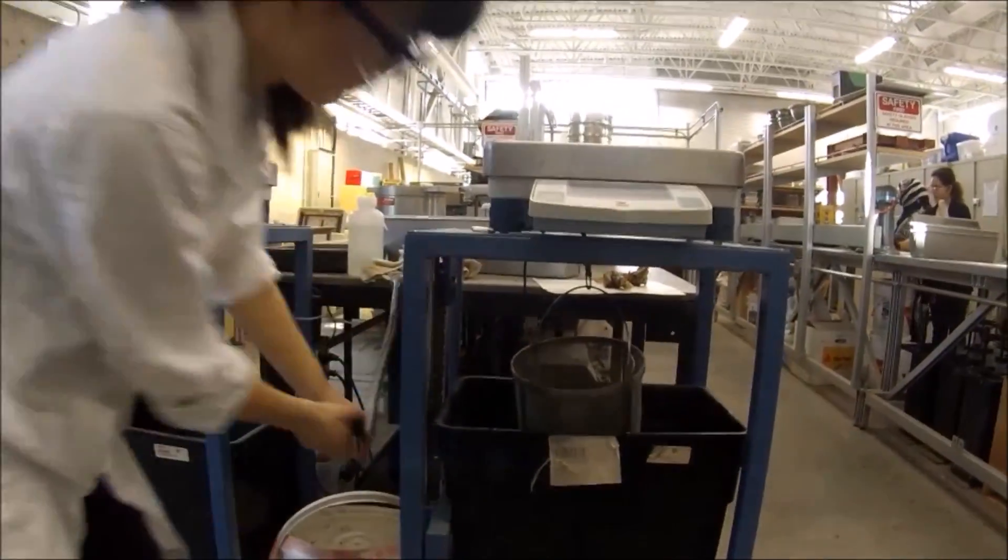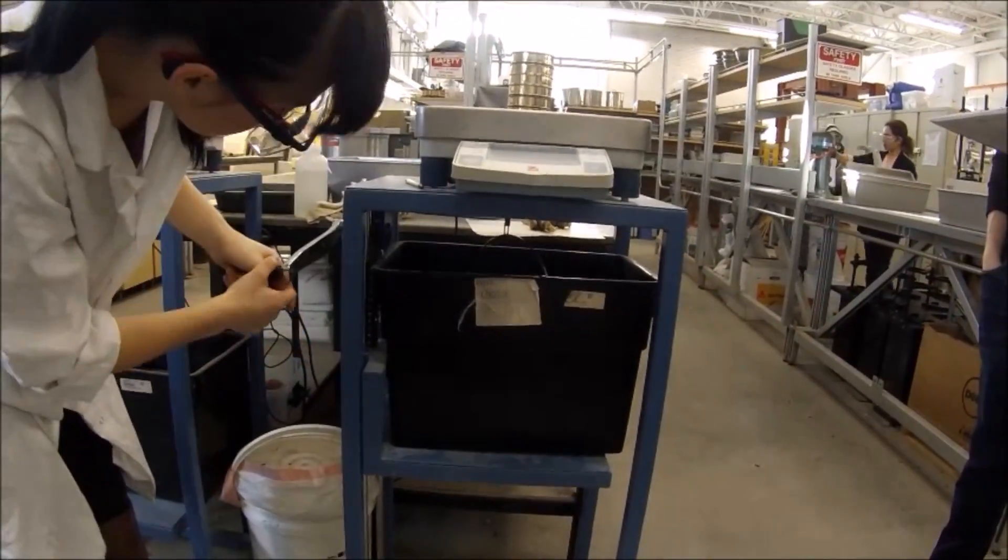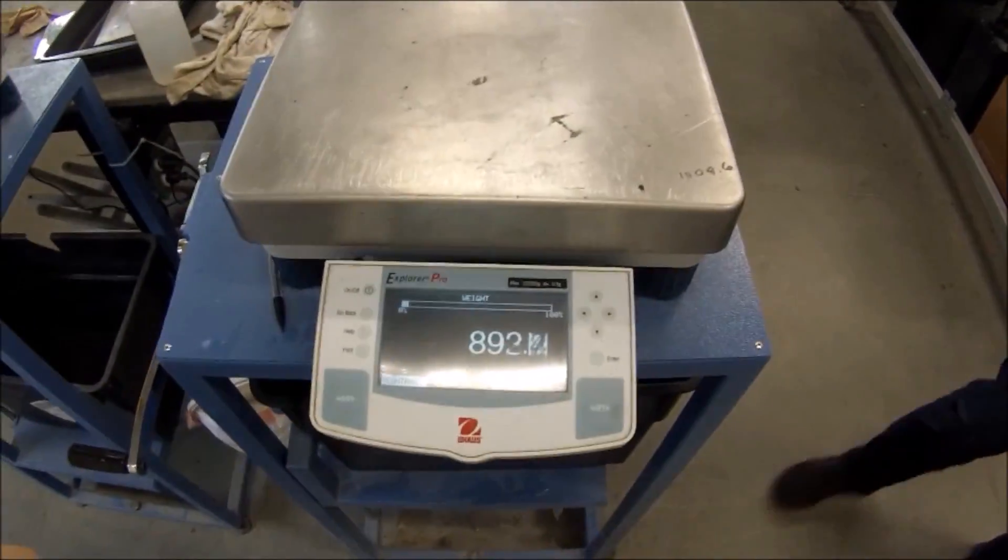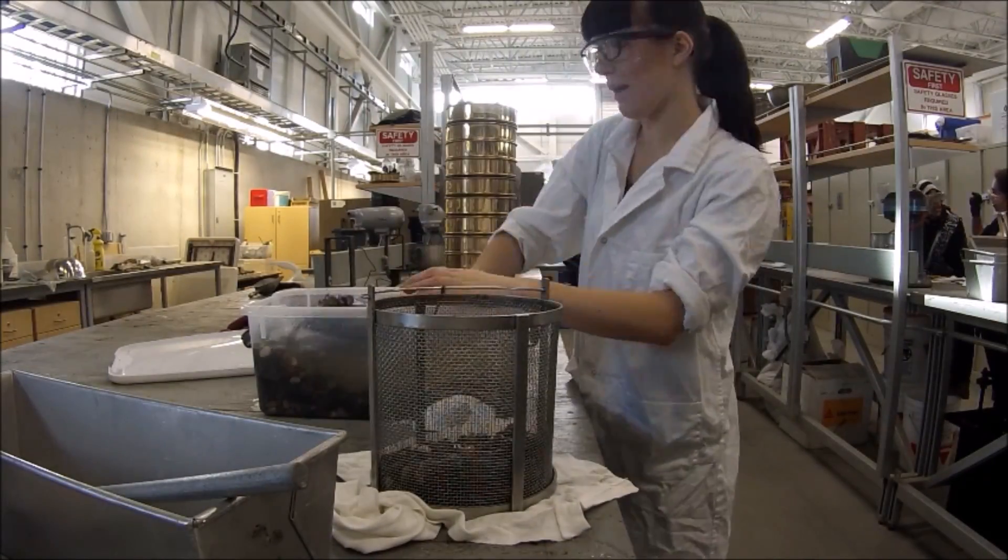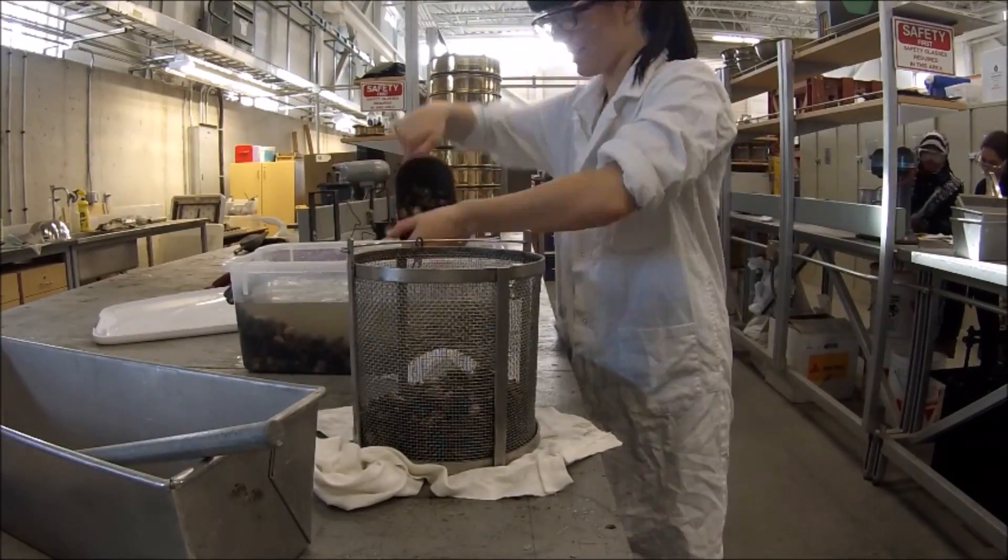First, find the mass of the empty mesh basket by submerging it in water. Next, find the mass of the sample by placing it in the wire mesh basket and submerging it in water.